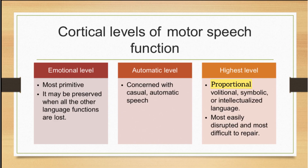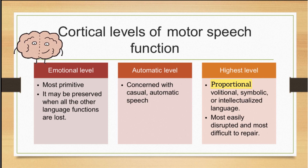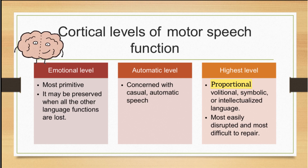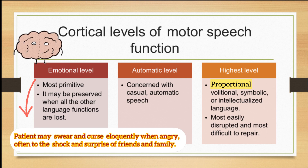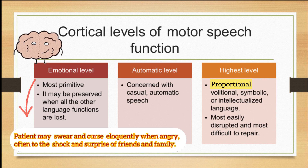Cortical levels of motor speech include the emotional level, which is the most primitive of all. It may be preserved when all other language functions are lost. The patient may be able to produce a few words at the height of emotions — for example, the patient may be able to swear or curse somebody when angry.